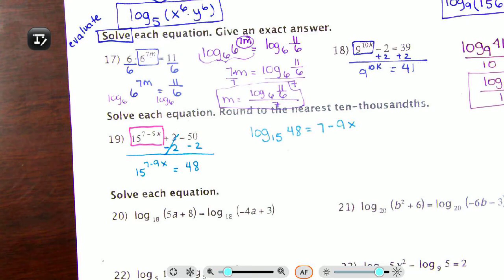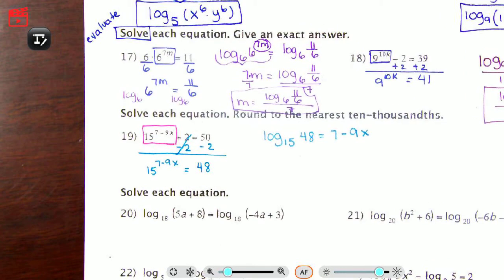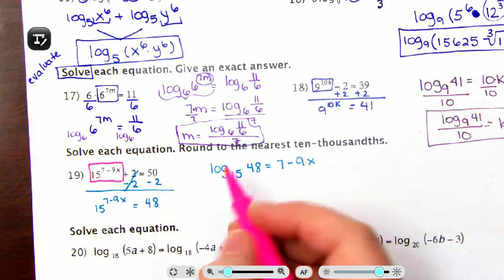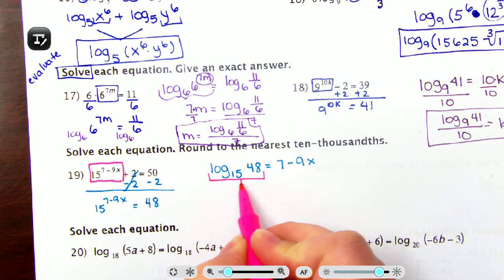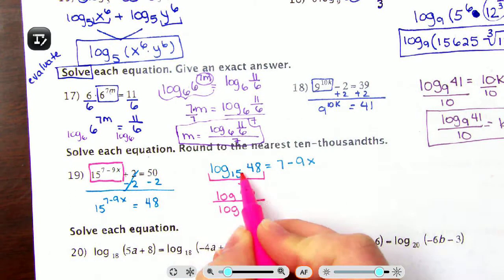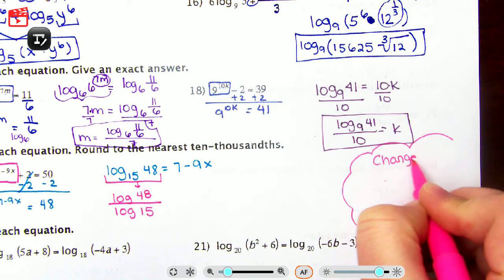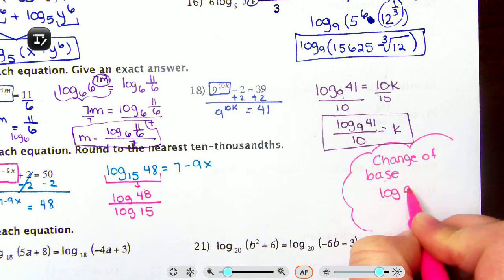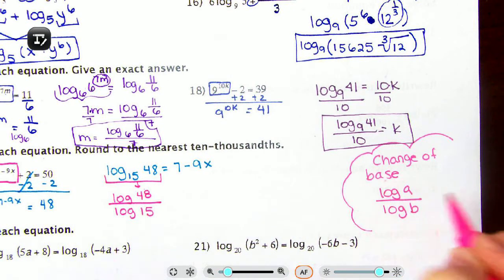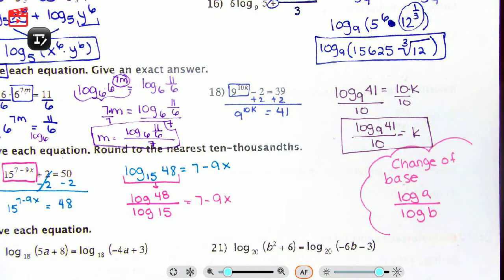There is also a way to use properties here, but I prefer the definition. Since I don't know what log base 15 of 48 is, I'll use the change of base formula — something my calculator can handle. I change log base 15 of 48 to log 48 divided by log 15. The change of base formula is: log of a divided by log of b, where a is 48 and b is the base, 15. That equals 7 minus 9x.